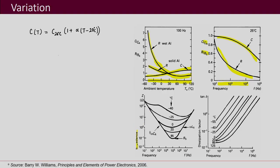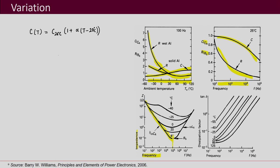A graph of capacitor impedance versus frequency shows that as frequency increases, the impedance decreases due to the capacitance effect. At the resonant frequency, the impedance reaches its minimum; after that, the ESL effect starts to dominate and impedance increases. Another graph of dissipation factor (tan δ) versus frequency shows that at higher frequencies the dissipation factor increases.